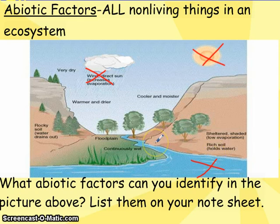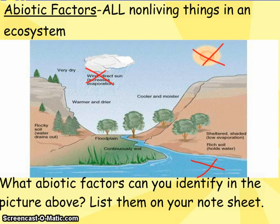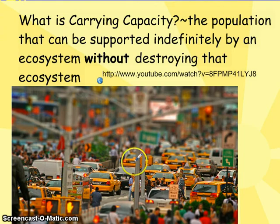When we look at an ecosystem, we also take into account carrying capacity — how many animals can actually live in a region successfully. Carrying capacity is the population that can be supported in an ecosystem without destroying the ecosystem itself. How do you think humans have been doing when it comes to carrying capacity?